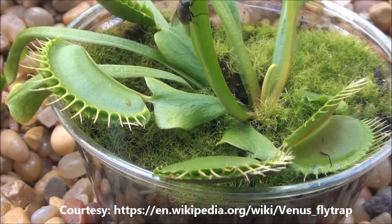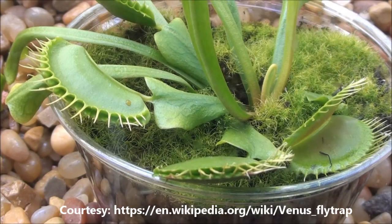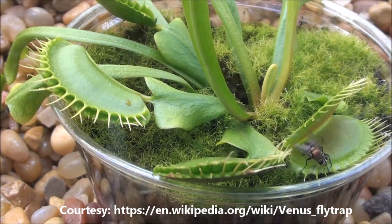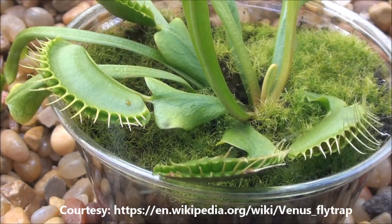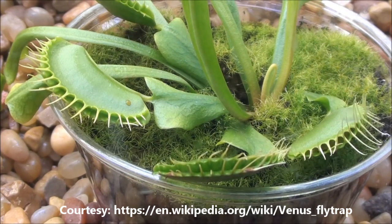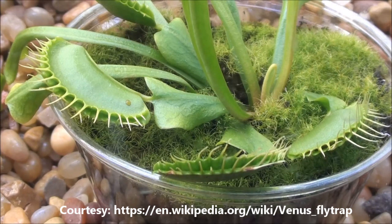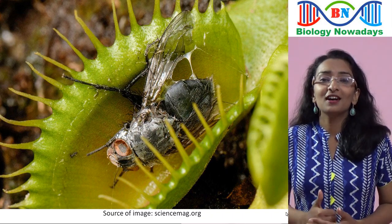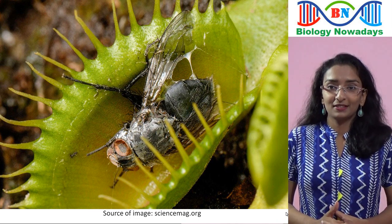In the case of the Venus flytrap, once closed with the insect inside, digestive enzymes are secreted and the nutrients from the insect body are all absorbed by the plant. The traps will open after 10 days, leaving behind only the husk of the insect.